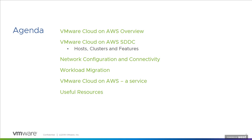Today we're going to cover a few things. Although this is part two of the webinar series, we'll start with a quick recap of VMware Cloud on AWS — what the product is and how it addresses common challenges customers face when looking to move to the public cloud. Then we'll cover the VMware Cloud on AWS SDDC in more detail, including hosts, clusters, and specific features. We'll look at networking configuration and connectivity, then focus on workload migration — how you can move workloads to VMware Cloud on AWS — and finish with a recap and useful resources.